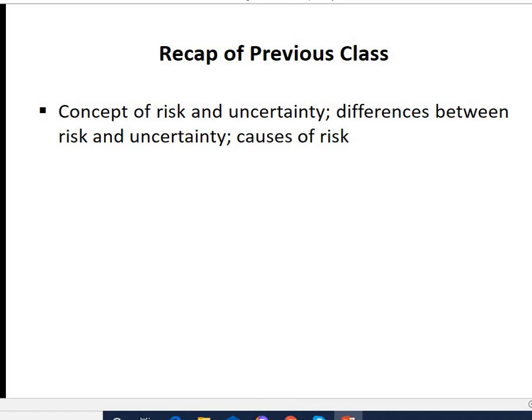In the previous session I dealt with the concept of risk and uncertainty — the difference between risk and uncertainty, and the different causes of risk. Risk means where we can assign some probabilities to the future outcome based on historical data, but in case of uncertainty we are unable to forecast the future. The causes of risk include political risk, legal risk, market risk, competitors risk, interest rate risk, and product demand risk.